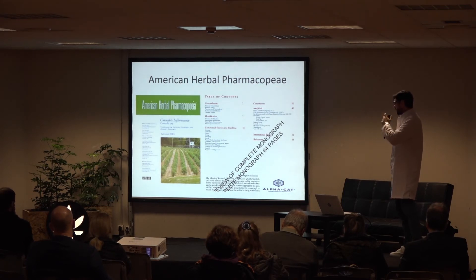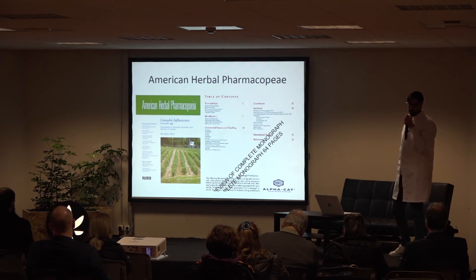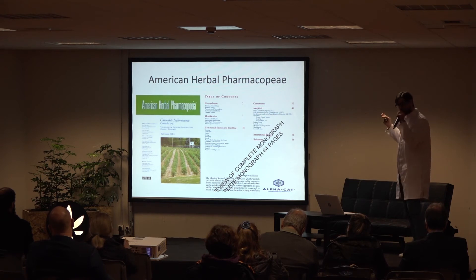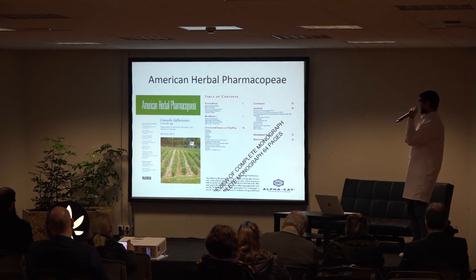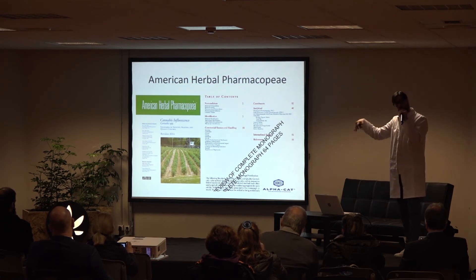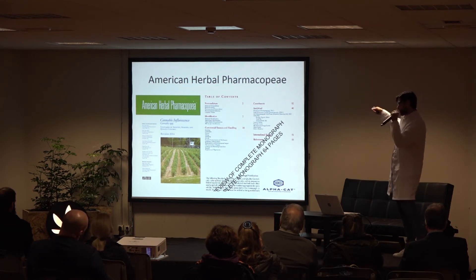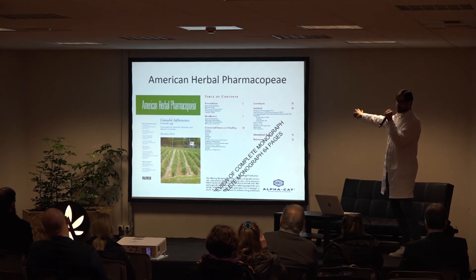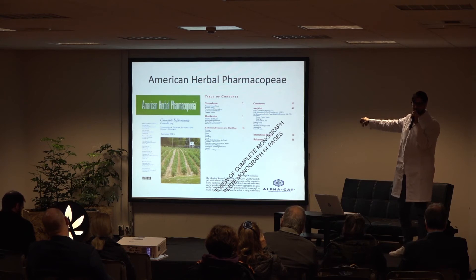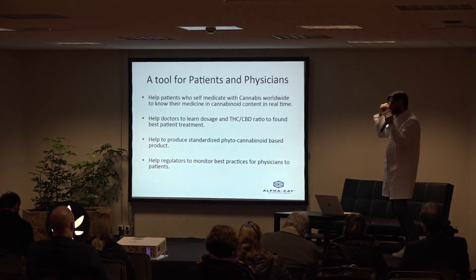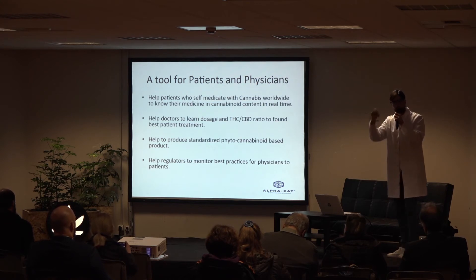This is the actual American Herbal Pharmacopoeia, where they discuss nomenclatures, identification, commercial source, handling, drying, harvesting, packing, and storage — everything to ensure the quality system. In the analytical methods section, the first method listed is thin-layer chromatography — the TLC we use and developed for AlphaCat — followed by HPLC and GC. You can purchase it online or find a PDF copy. It's very handy if you are getting into medical cannabis, as it gives you the right idea of how to operate at every stage of production.